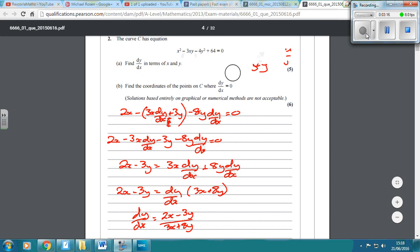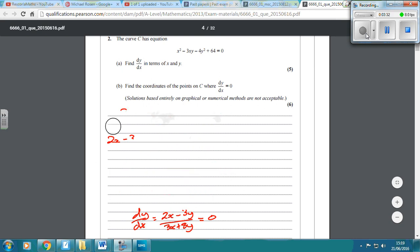Now, the next thing we're going to do is we're going to find the coordinates of the points on C where dy by dx equals 0. So we've just worked out what dy by dx is. So now what we're going to do is we're going to set that equal to 0. Now, when you set a fraction equal to 0, it doesn't matter about the bottom thing. The only thing that you're looking at is the top. So we've got to set 2x minus 3y equal to 0.